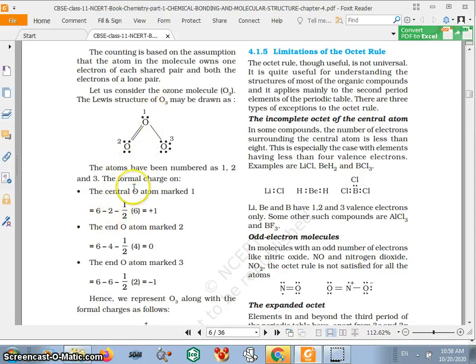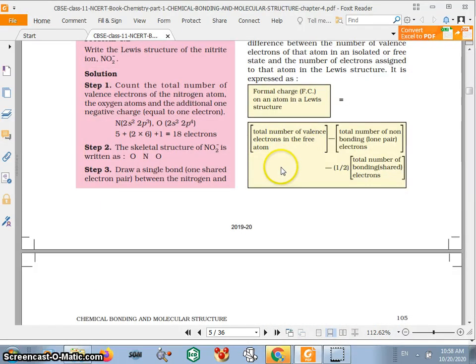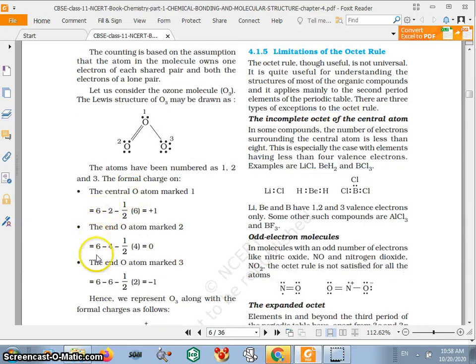Six minus two minus half into six is equal to plus one charge. This you can see. Six minus four minus half into four, zero charge. And this is six minus six minus half into two is equal to minus one charge. So this one is positive charge, this one is negative charge, this one is zero charge. How you can calculate?